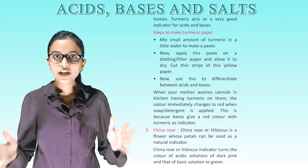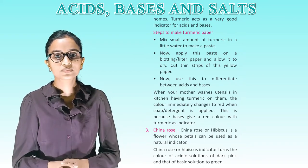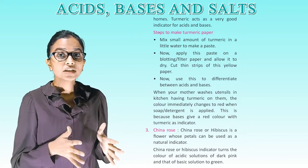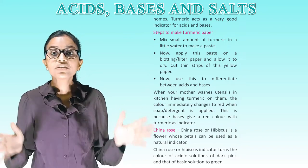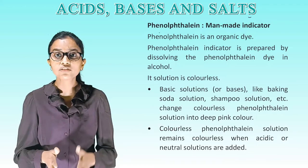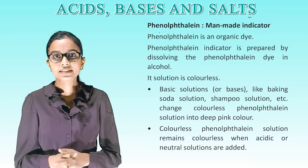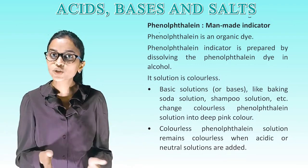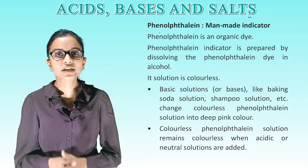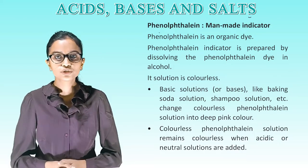Third: china rose. China rose (hibiscus) is a flower whose petals can be used as a natural indicator. China rose indicator turns the color of an acidic solution dark pink and that of a basic solution to green. Phenolphthalein — man-made indicator. Phenolphthalein is an organic dye prepared by dissolving the phenolphthalein dye in alcohol. Its solution is colorless. Basic solutions like baking soda solution or shampoo solution change colorless phenolphthalein to deep pink. Phenolphthalein remains colorless when acids or neutral solutions are added.